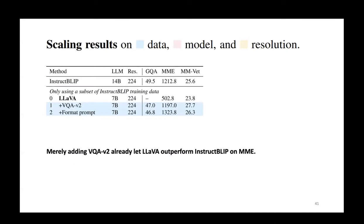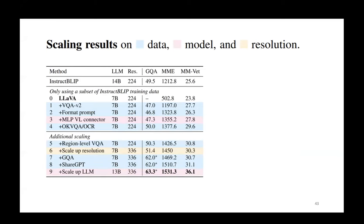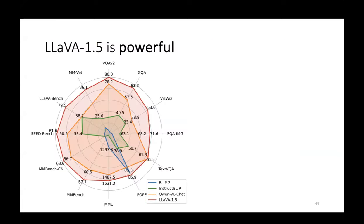Adding the formatting prompt allows LLaVA to surpass InstructBLIP on MME and also MNVET. We further add additional datasets like OK-VQA and OCR datasets, so it actually outperforms InstructBLIP on all validation benchmarks, when LLaVA is only using a subset of its training data. We also add additional datasets to further scale it up, and our final model LLaVA 1.5 achieves great performance on these benchmarks.